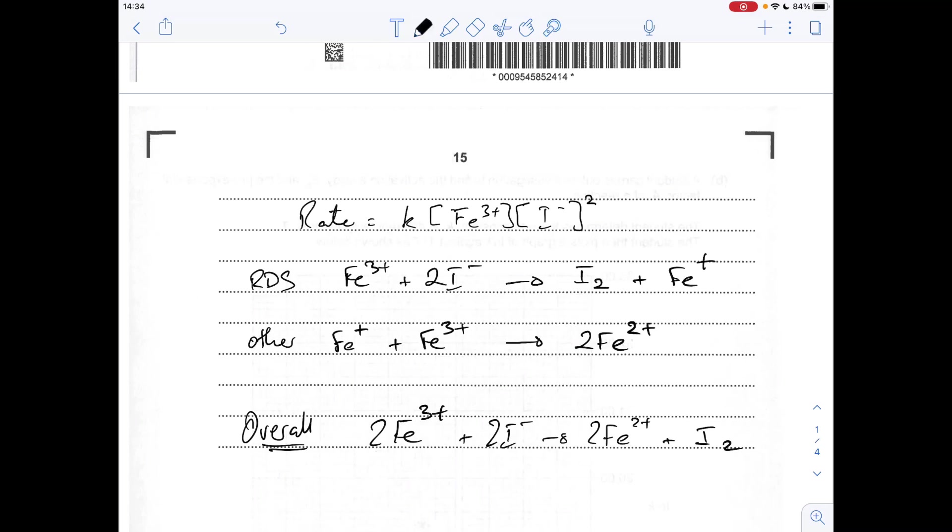The mechanism is consistent with the evidence because the reactants in the rate determinant step are the reagents and the factoring in the orders in the rate determinant step. And when you add the two steps together, you get the overall equation. And remember, the Fe+ will cancel. So we've got 2 Fe3+ plus 2 I minus gives I2 and 2 Fe2+.